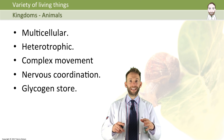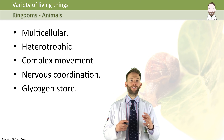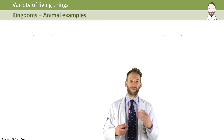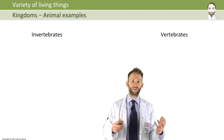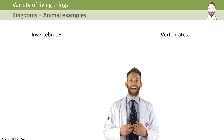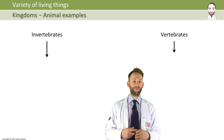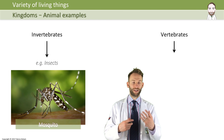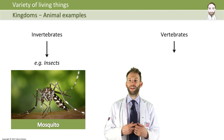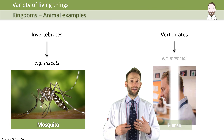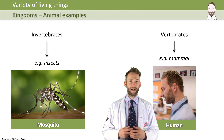You can further divide animals into invertebrates and vertebrates — whether they have backbones or not. An example of an invertebrate might be a mosquito, a type of insect. An example of a vertebrate might be a human, like a mammal.